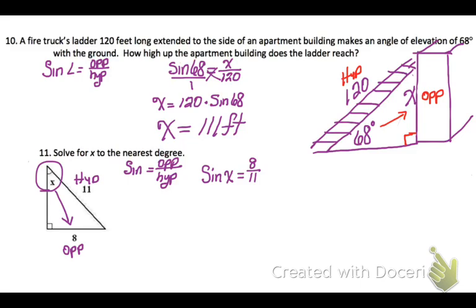But I don't want the sine of angle X. I want X. So I'm going to do the inverse of sine to get X by itself. And I have to do the inverse on the other side. When I plug that in my calculator, second sine 8 over 11, I'm going to get and then round to a whole number. I'm going to get that X is a 47 degree angle.